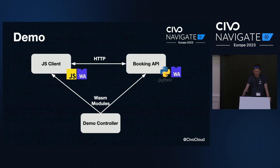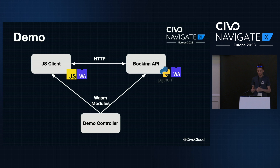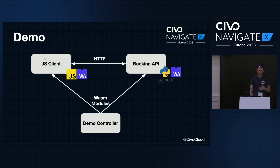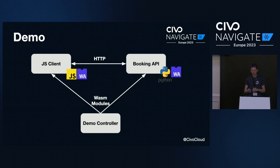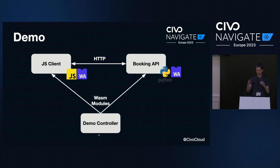Potentially, for very data-intensive policies, you might also see performance improvements over the Go implementation. I'm going to present a short demo showing a simple web application where I configure various policies in a sample domain around booking of train tickets. I'll use a controller UI to update the policy as I go through. I'll have two applications: a JavaScript client — a form for users to fill out to buy train tickets — and a booking API, which is a Python server. Both applications will use the WebAssembly version of a policy compiled based on the policy I've configured.